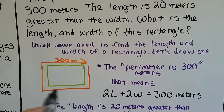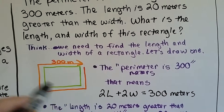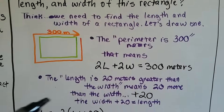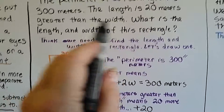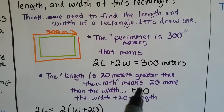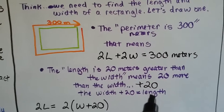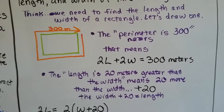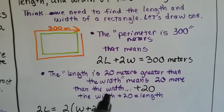That means two lengths plus two widths equals 300 meters. The length is 20 meters greater than the width, meaning there's 20 more than the width — it's plus 20. So the length equals the width plus 20. If the length is 20 meters more than the width, then it's the same as the width plus 20.